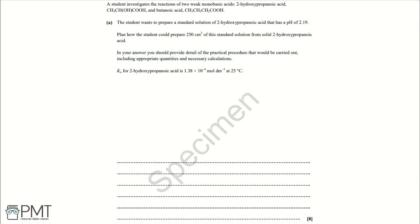A student investigates the reactions of two weak monobasic acids: 2-hydroxypropanoic acid, CH3CHOHCOOH, and butanoic acid, CH3CH2CH2COOH. Part A: The student wants to prepare a standard solution of 2-hydroxypropanoic acid that has a pH of 2.19. Plan how the student could prepare 250 cm³ of this standard solution from solid 2-hydroxypropanoic acid, including appropriate quantities and necessary calculations. The Ka for 2-hydroxypropanoic acid is 1.38 × 10⁻⁴ mol dm⁻³ at 25°C.